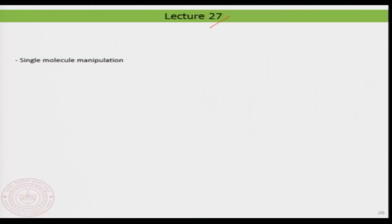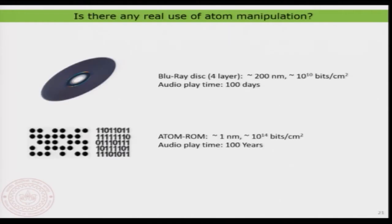Hello everyone, welcome back to lecture 27. In this lecture we will have a look at something called single molecule manipulation. You recollect that in the previous lecture we had a look at atom manipulation on surface, where we create this kind of atomic lattice on the surface using manipulation — basically just adding an atom or not adding an atom there.